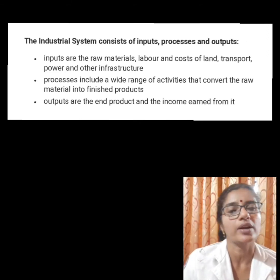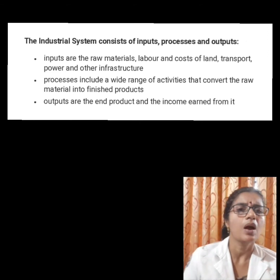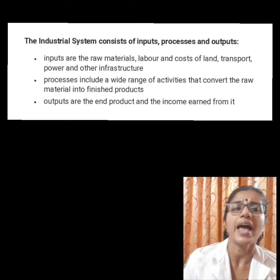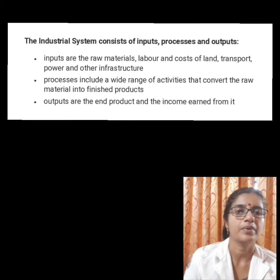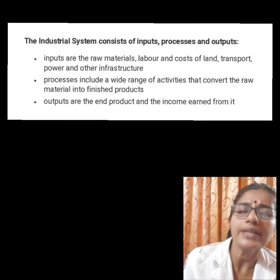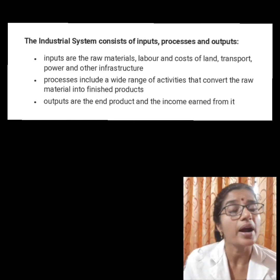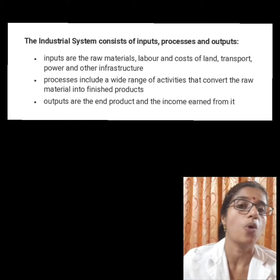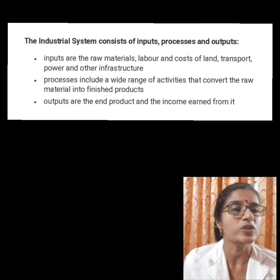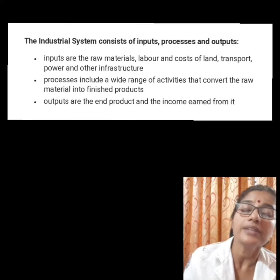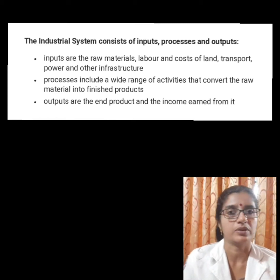Next we will discuss about the industrial system. What is an industrial system? An industrial system consists of inputs, processes and outputs.